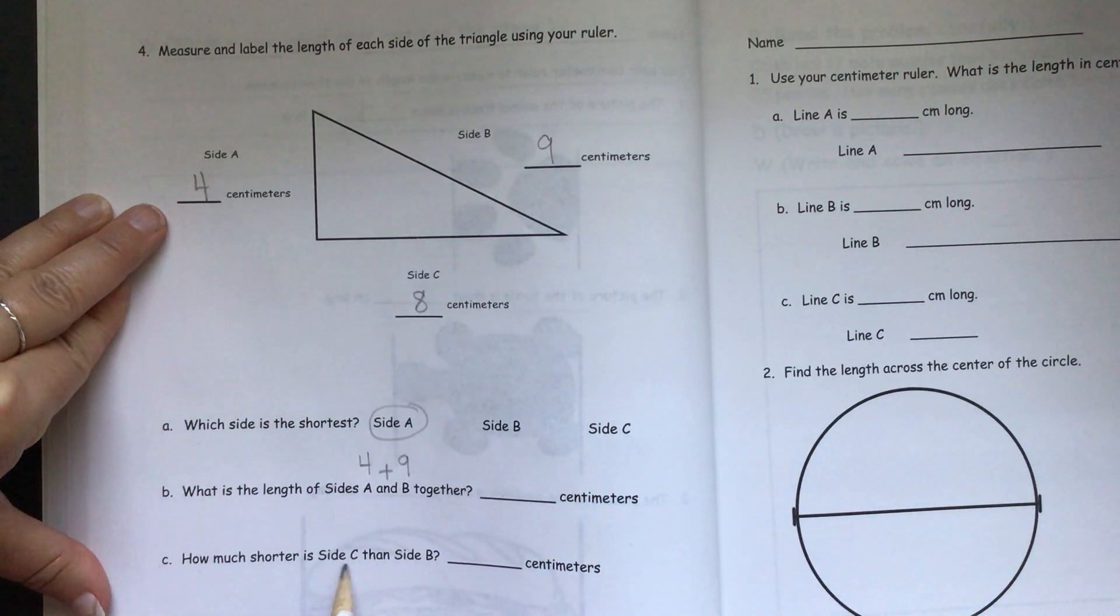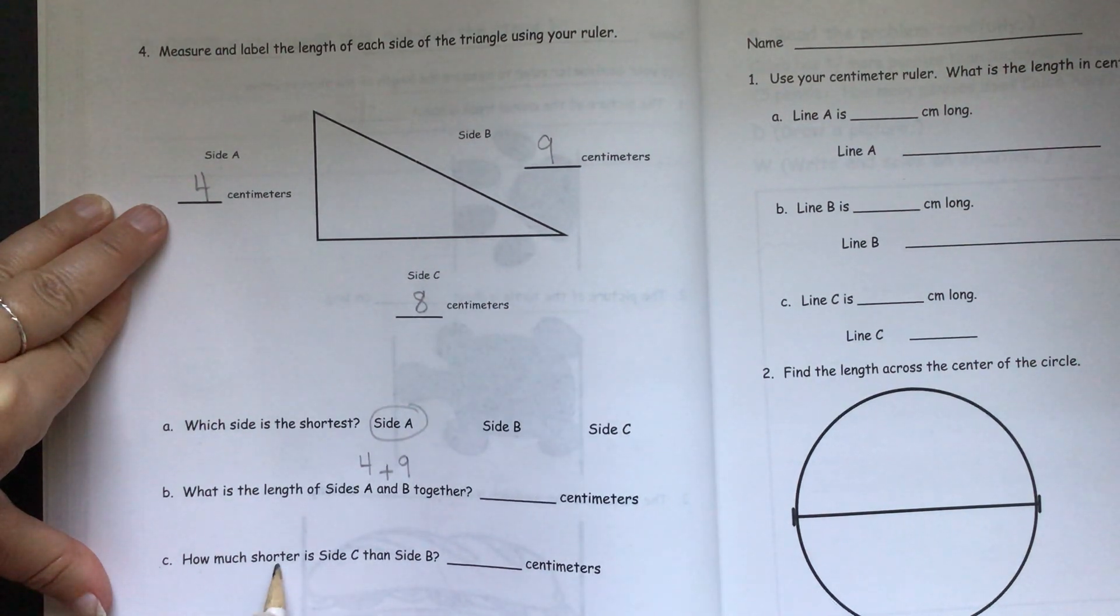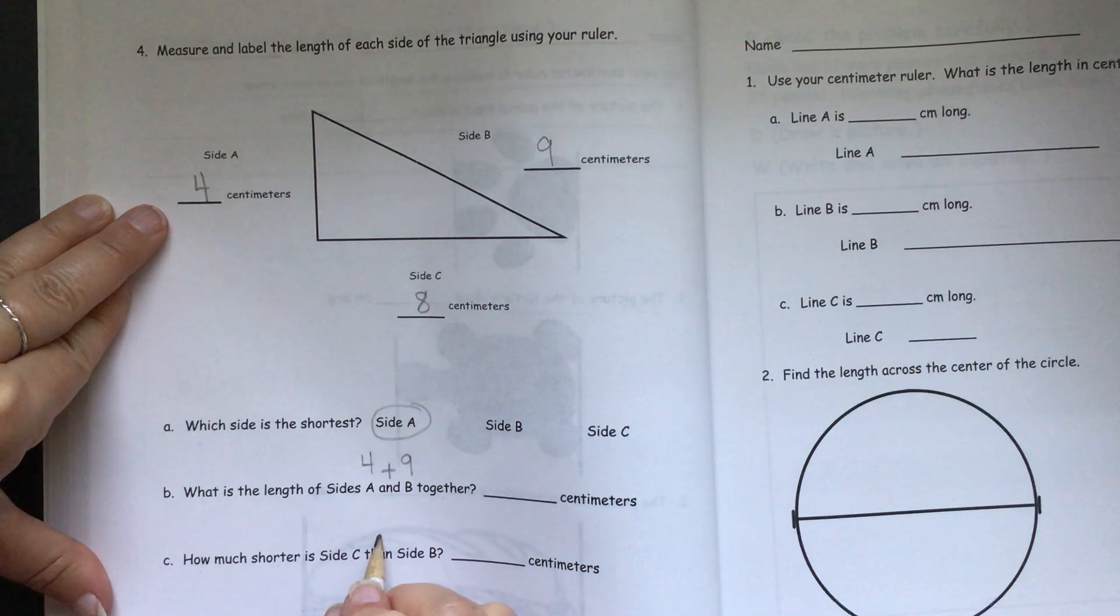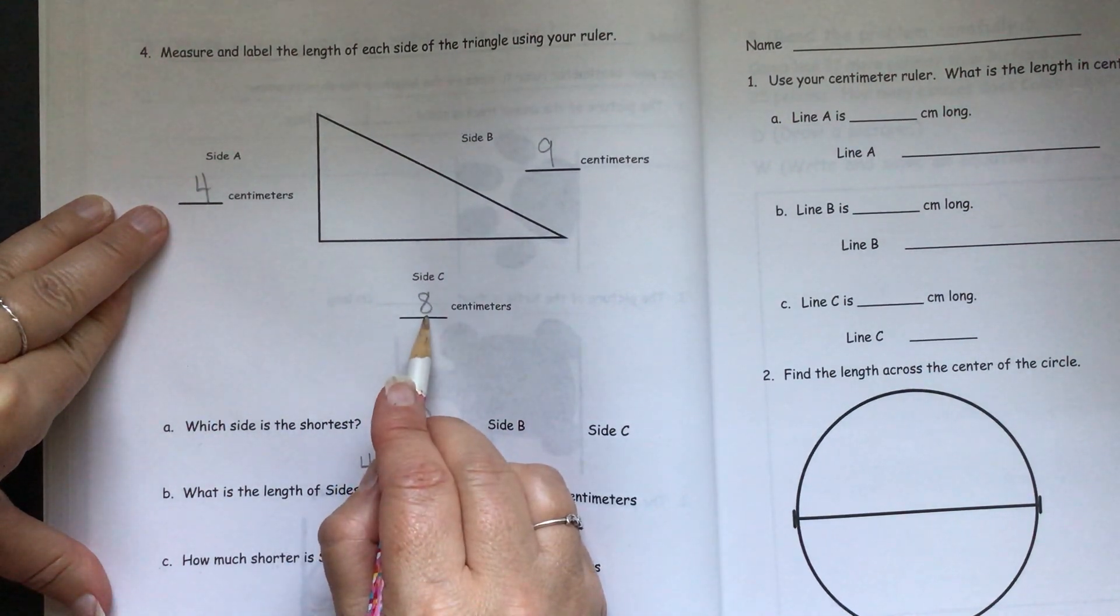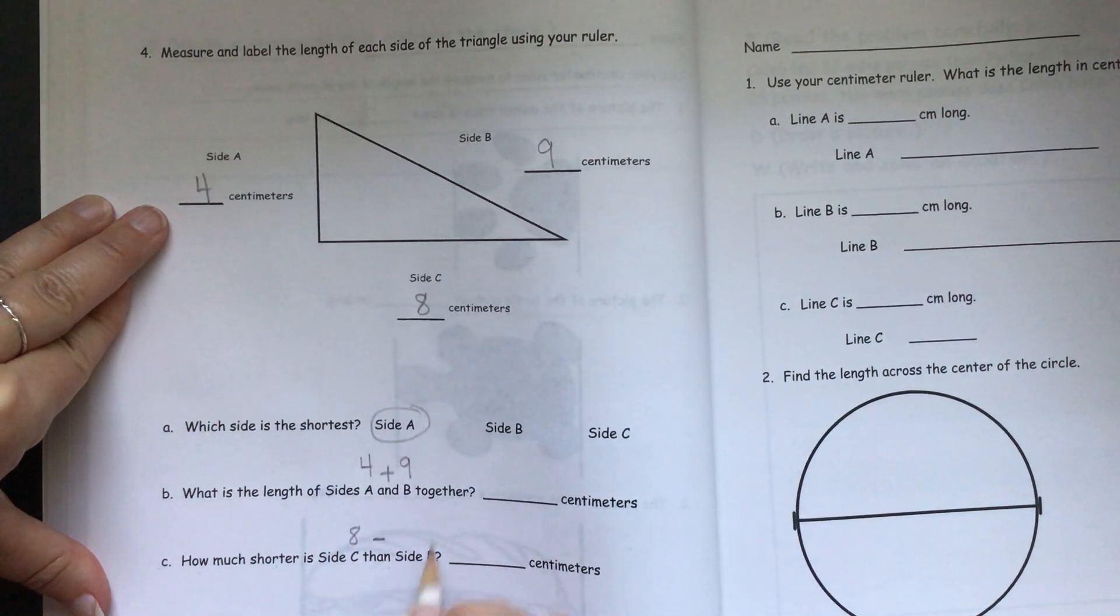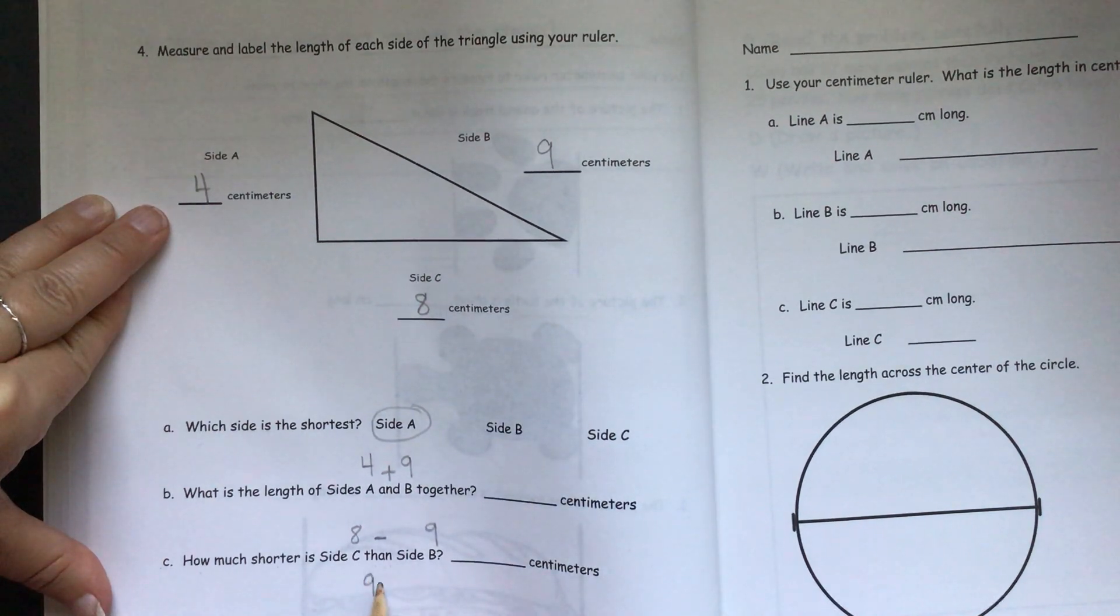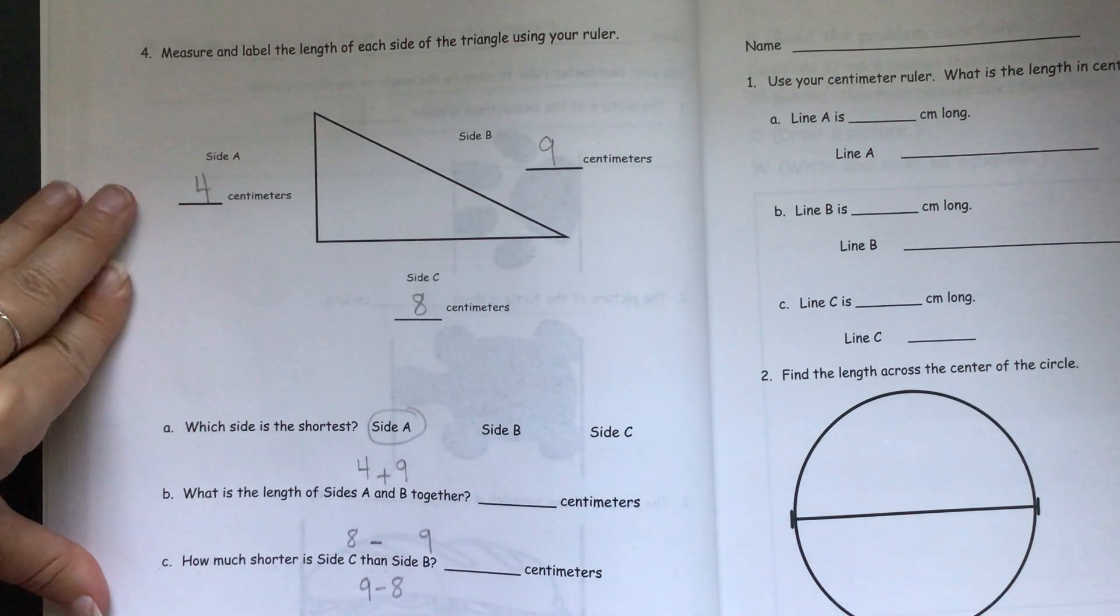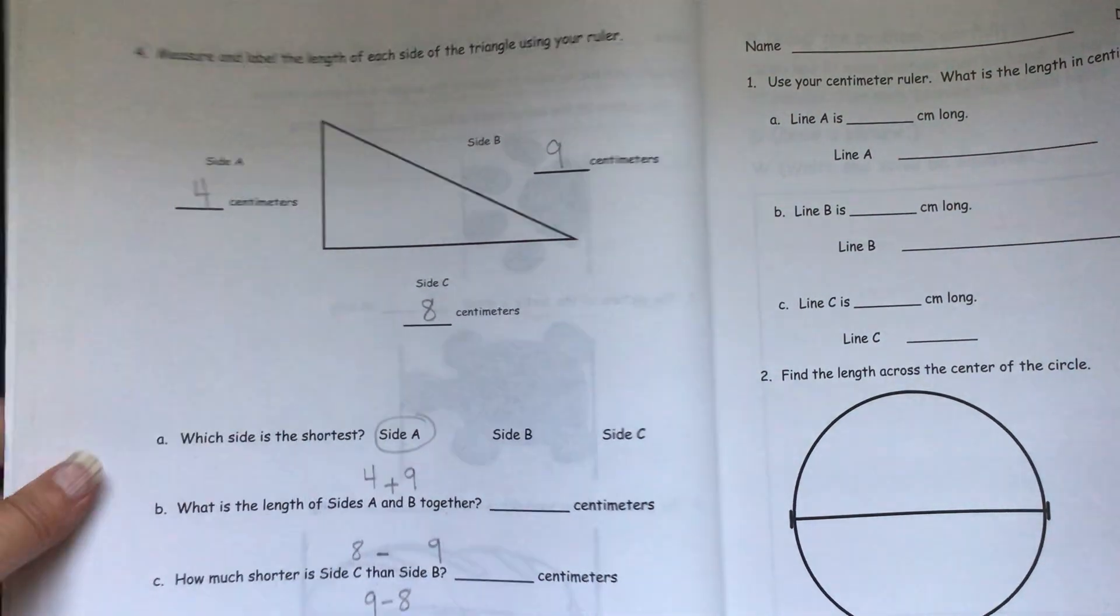How much shorter is side C than side B? We see shorter. We see than. Than is a comparing word. So, we're going to subtract. We see that side C is eight, and side B is nine. If we were setting up an equation here, it would have to be nine minus eight to get this answer here. Because we always start with the big number when we subtract in second grade. I'll let you do those problems on your own.